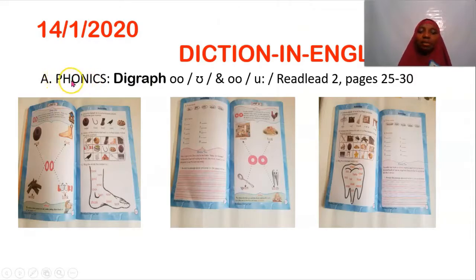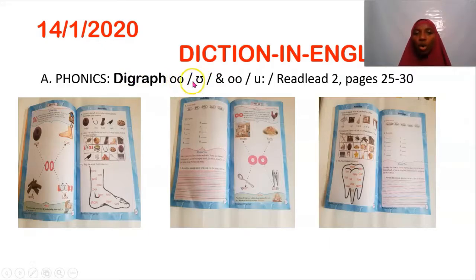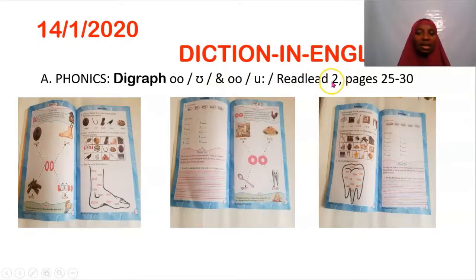My lesson comes in three parts. Part A is phonics. The topic under phonics is OO — the short diagraph OO sound and the long diagraph OO sound. This is from Read Lead Phonics Book 2, pages 25 to 30.